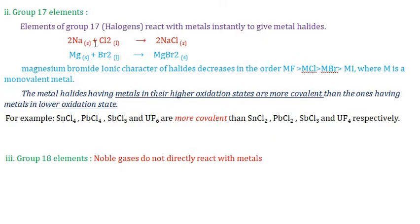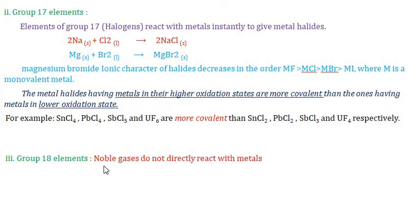Group 17 elements react with metals instantly to give metal halides. Halogens react with the most reactive elements like alkali metals and alkaline earth metals to form their corresponding halides. Sodium and magnesium react with chlorine and bromine to form sodium chloride and magnesium bromide. Metal halides with metals in higher oxidation states are more covalent than those in lower oxidation states.